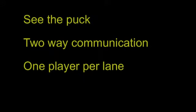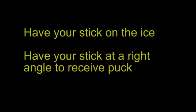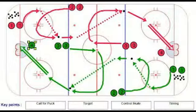See the puck. Two-way communication. One player per lane. Have your stick on the ice. Have your stick at a right angle to receive the puck. Let's take a look at the Sweeney drill here — there are four lines.